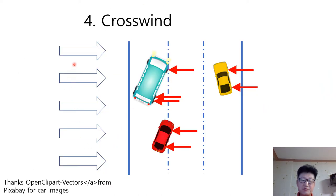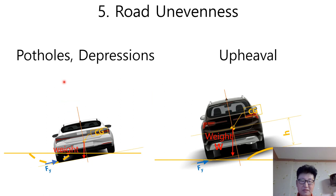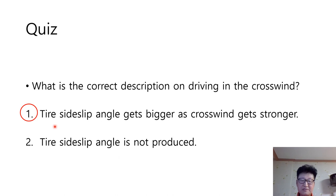Crosswind also generates lateral force, produced in the opposite direction of the crosswind. Road features such as potholes, depressions, and upheavals also produce lateral force. The answer to the quiz is number one: tire side slip angle gets bigger as crosswind gets stronger.